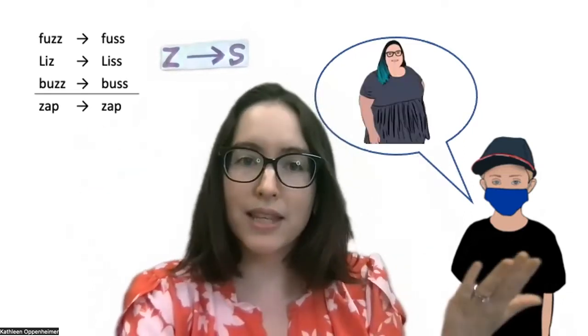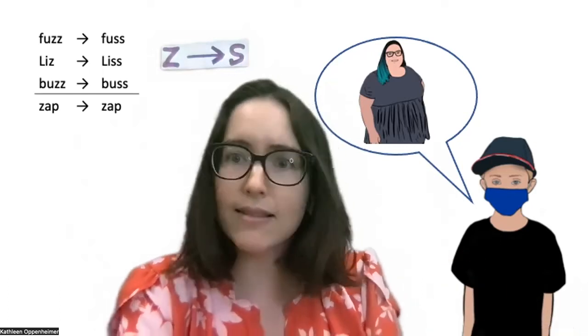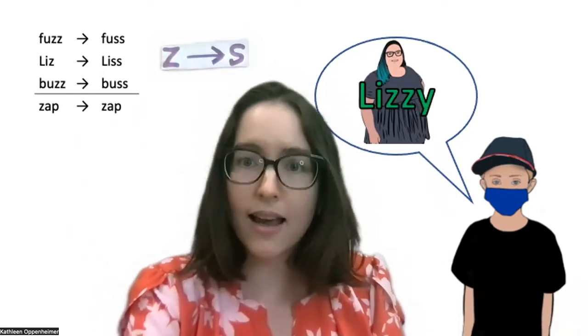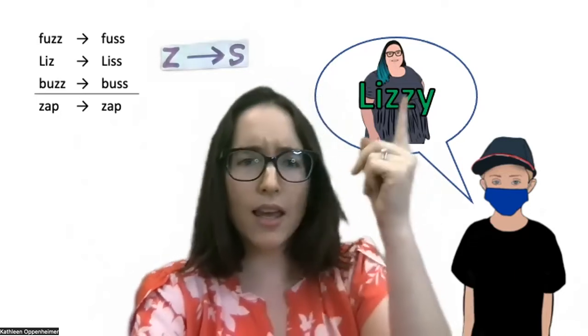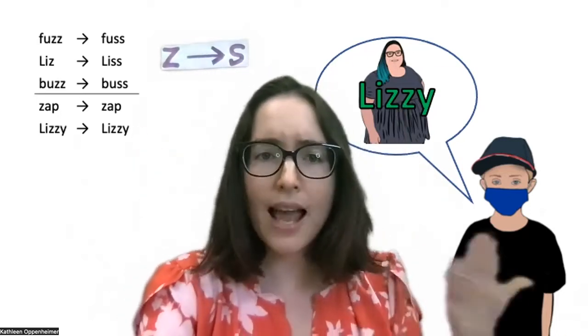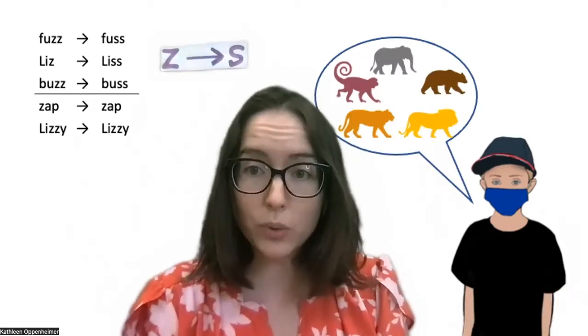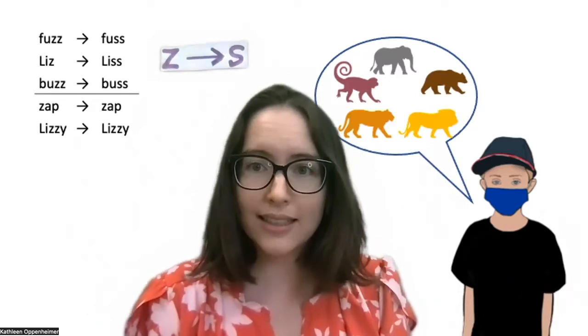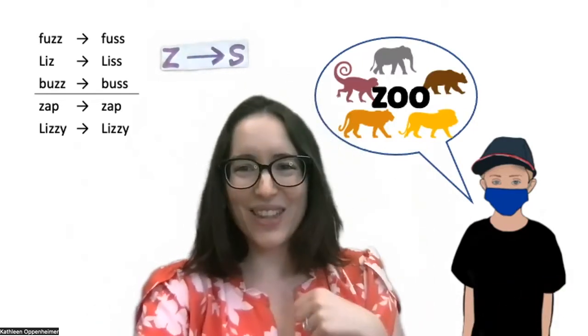This is his friend Lizzy — how do you think he'll pronounce Lizzy? He says Lizzy. Interesting. Okay, so let's add that to our list. And then finally, zoo — how do you think he'll pronounce zoo? He still says zoo.